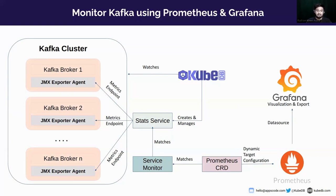The JMX port will be pointed to by a stats service, which is created and managed by the KUBEDB operator. A service monitor matching the labels of that stats service will be matched by a Prometheus CRD operator. The Prometheus CRD operator will then send a dynamic target configuration — all necessary configurations to send the metrics from the Kafka pods to Prometheus — and Prometheus will scrape those metrics. Finally, you can use Grafana with Prometheus as a data source to visualize all of those Kafka metrics.